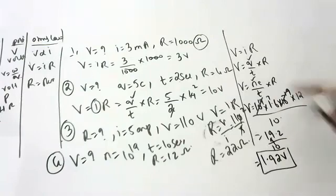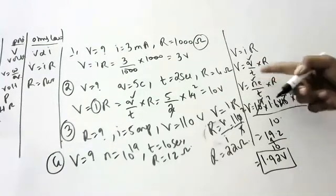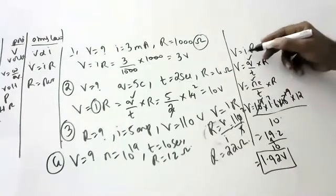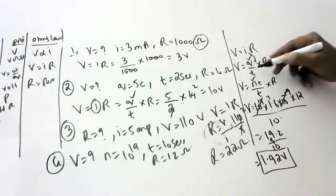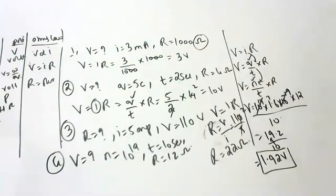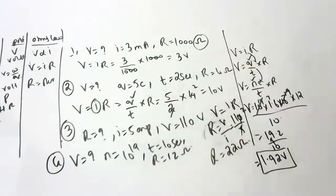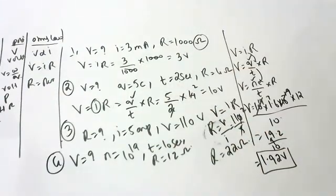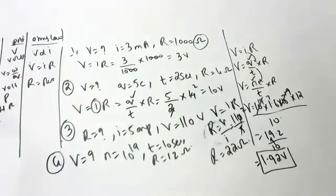All these formulas are interrelated — Q = Ne, I = Q/T, V = IR — and you cannot neglect any of them. That completes Ohm's Law. If you have any doubts, please ask.